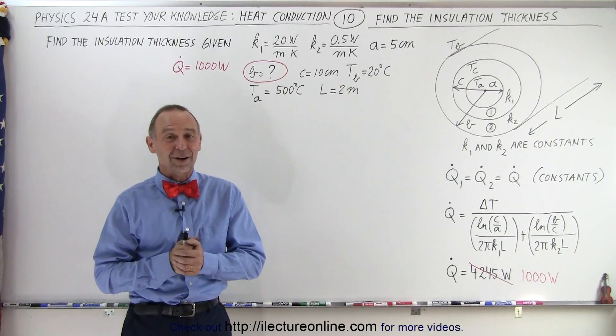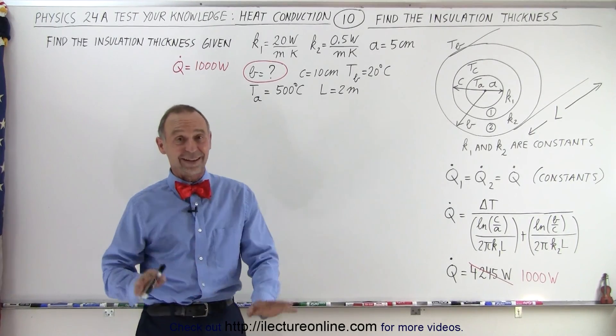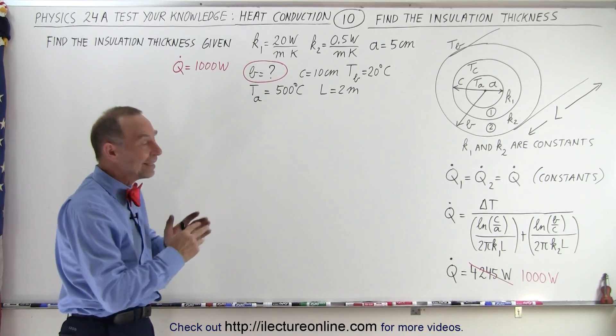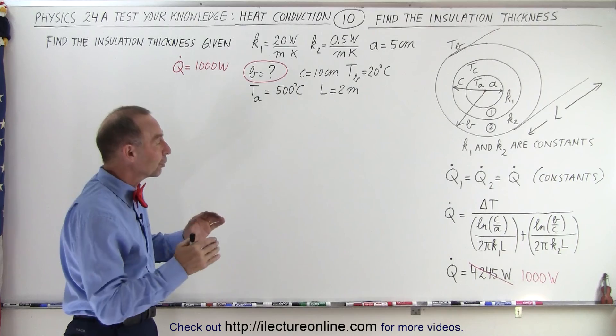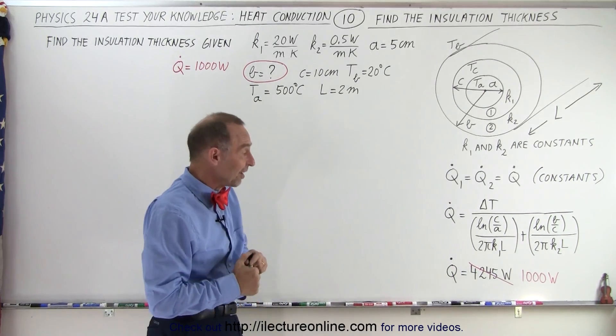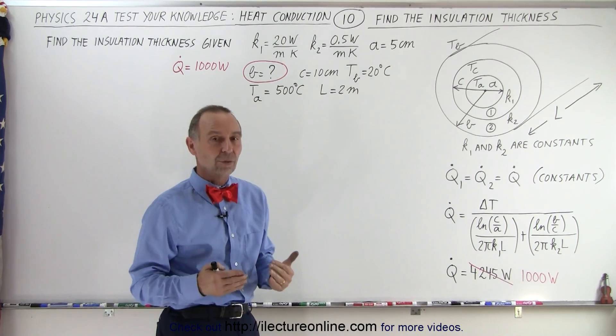Welcome to Electronline. Our next example, not second example, we've seen a lot of examples, but our next example is finding the insulation thickness required to lower the heat flow from the original 4245 watts down to a thousand watts.